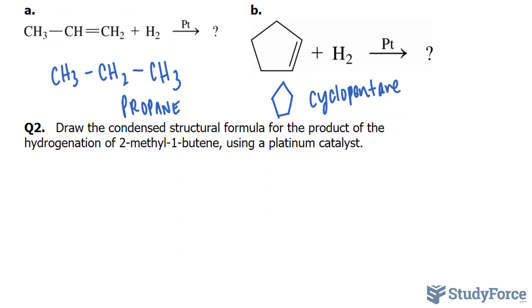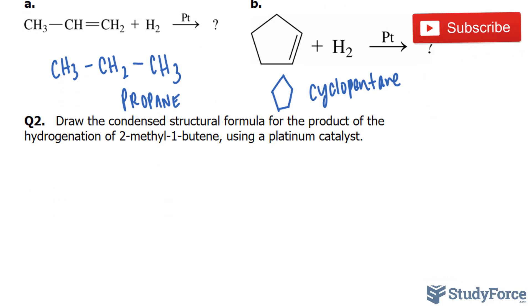Let's move on to question two. Draw the condensed structure formula for the product of the hydrogenation of 2-methyl-1-butene using a platinum catalyst.